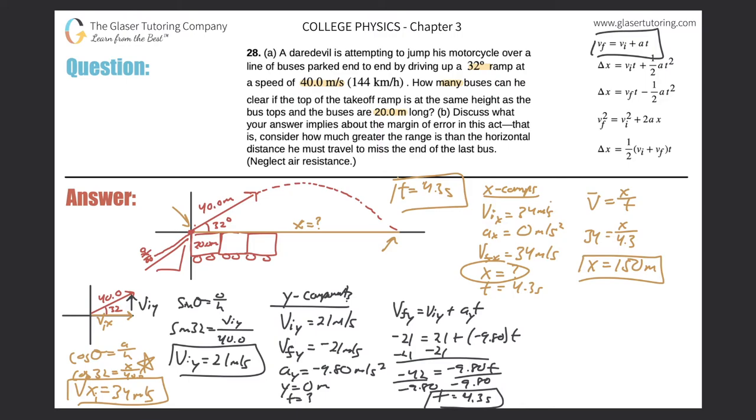Alright. So that's cool. So that's how far he will travel in the x direction. So this whole yellow length is now 150 meters. So how can we now find how many buses he can clear? Because that's the question. Well, if you know that the whole length here is 150 meters and each bus is 20 meters, can't we just do a simple division? Can't we just take 150 meters, divide it by 20 meters, and that will tell us how many buses there are? Yes. So 150 divided by 20 works out to be 7.5. So 7.5 buses.